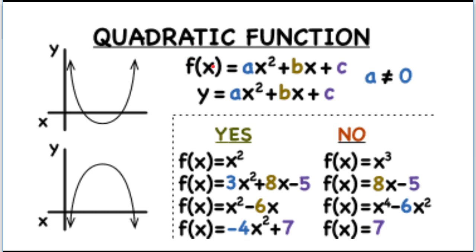A quadratic function is a function that's got a square term and it can be written in the form ax² + bx + c. The only requirement is that a can't be zero, because if a is zero there's nothing going to be squared. The b term and the c term can be missing, but a is always going to be there. When you graph a quadratic it's going to make a parabola — either open upward or open downward.